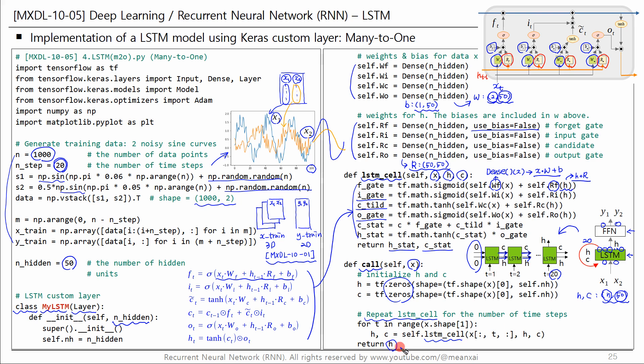Since this LSTM has a many-to-one structure, only the final output H is passed to the output layer. The final H contains all the information from the previous time steps — that is, it contains information about the sequence data from the past to the present.